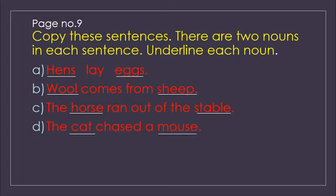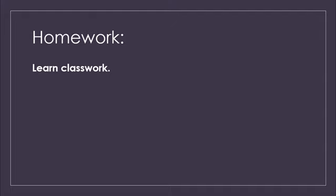This is the exercise from page number 9. To repeat: hens and eggs are nouns; wool and sheep are nouns; horse and stable are nouns; cat and mouse are nouns. Your homework is to learn the classwork. You have to do practice on your rough notebook for these two pages — page number 8 and 9 — and learn them.